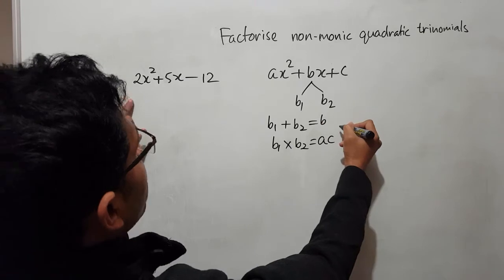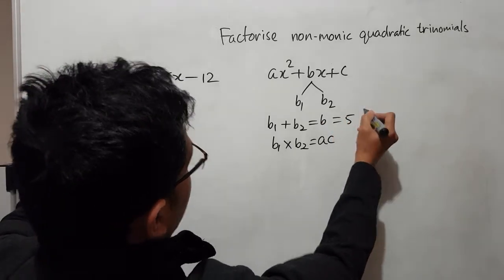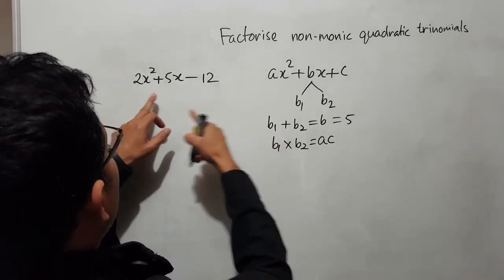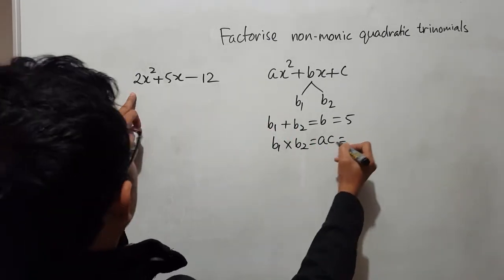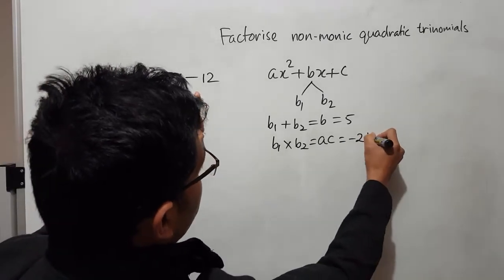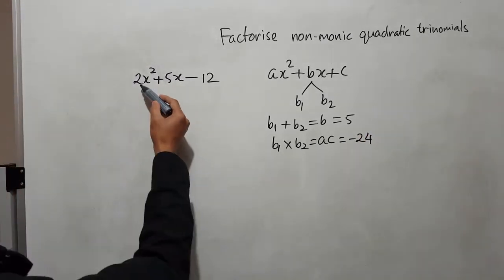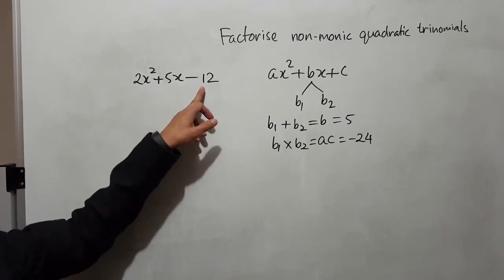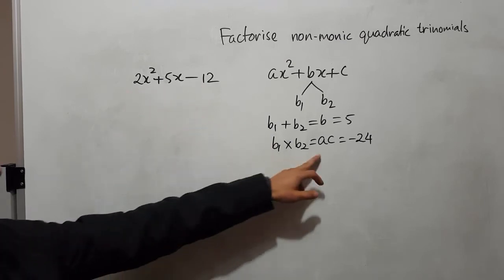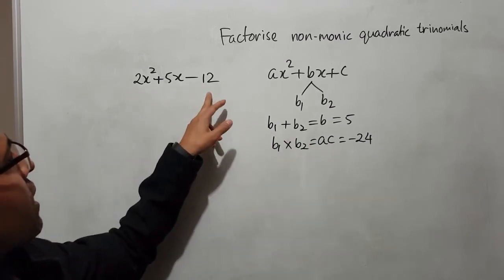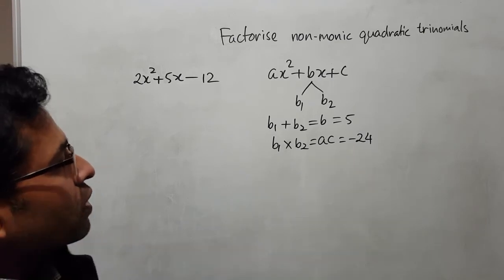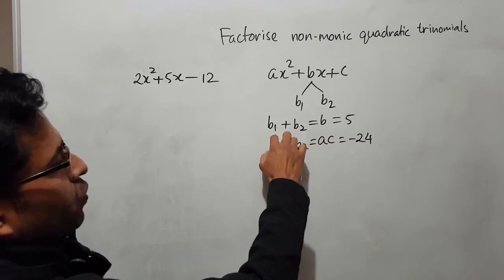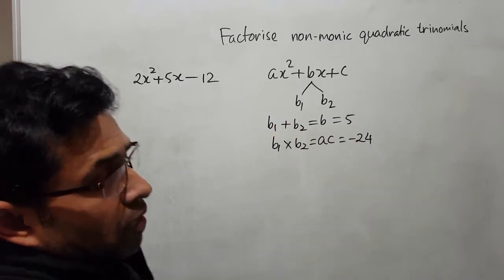For this problem, our b is 5. And our ac means a times c, where a is 2 and c is minus 12, so ac is minus 24. We are multiplying 2 and minus 12. So we have to break the middle part into two segments such that their addition gives 5 and their multiplication gives minus 24.